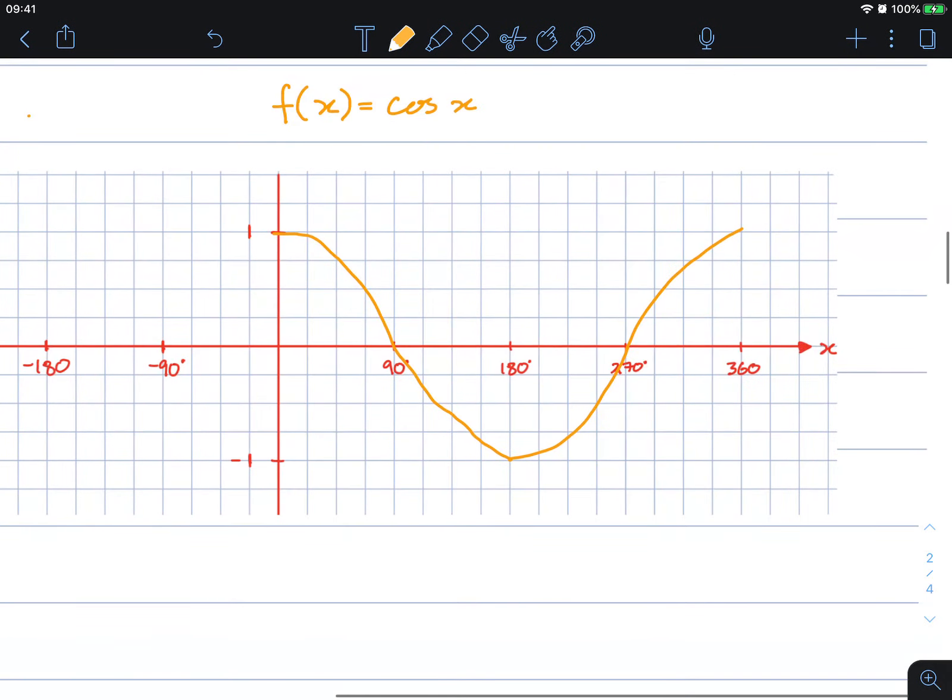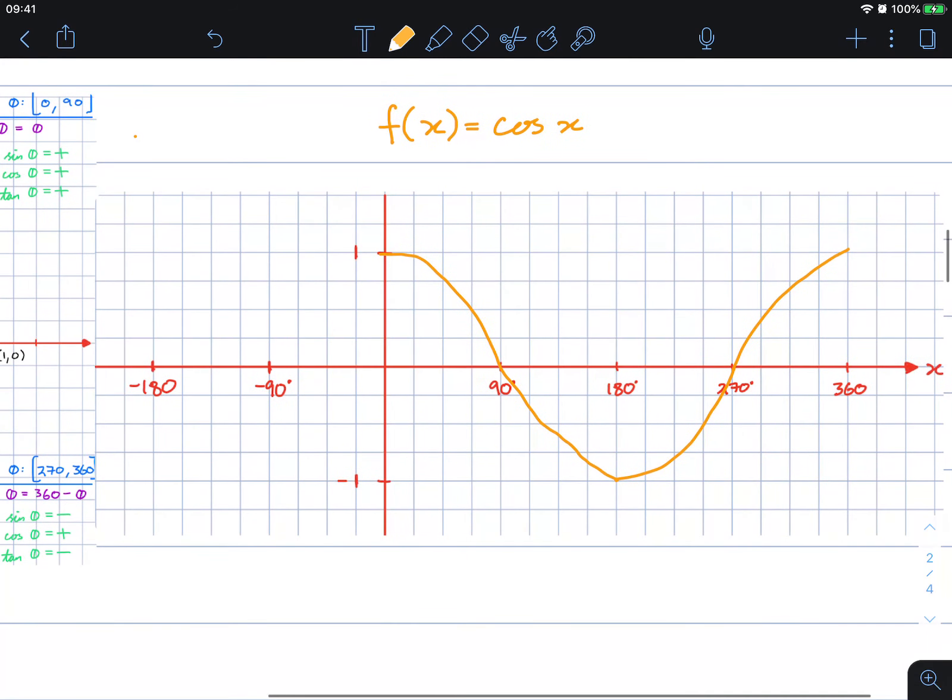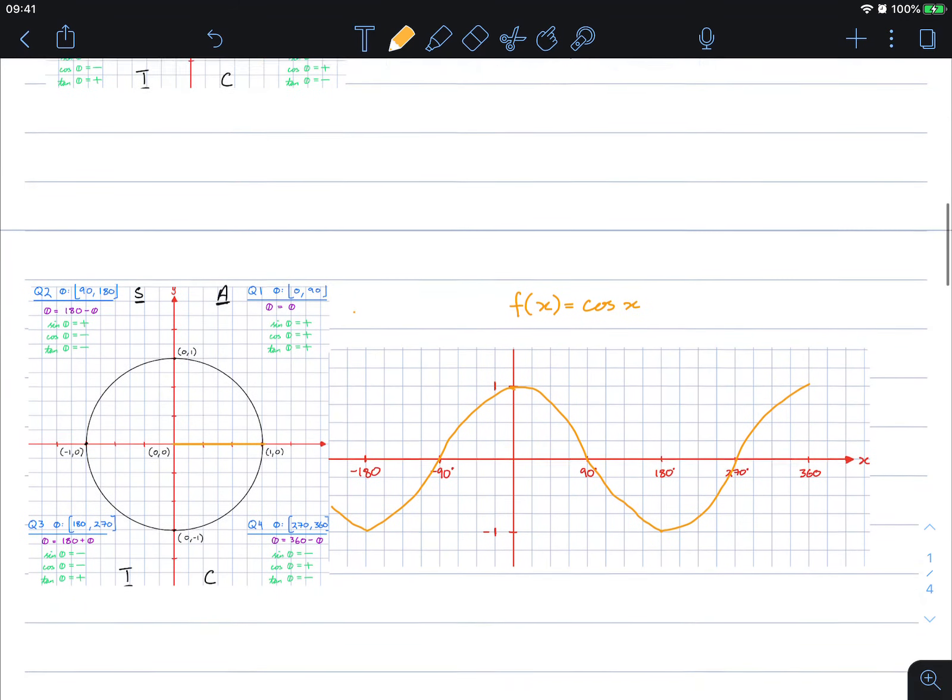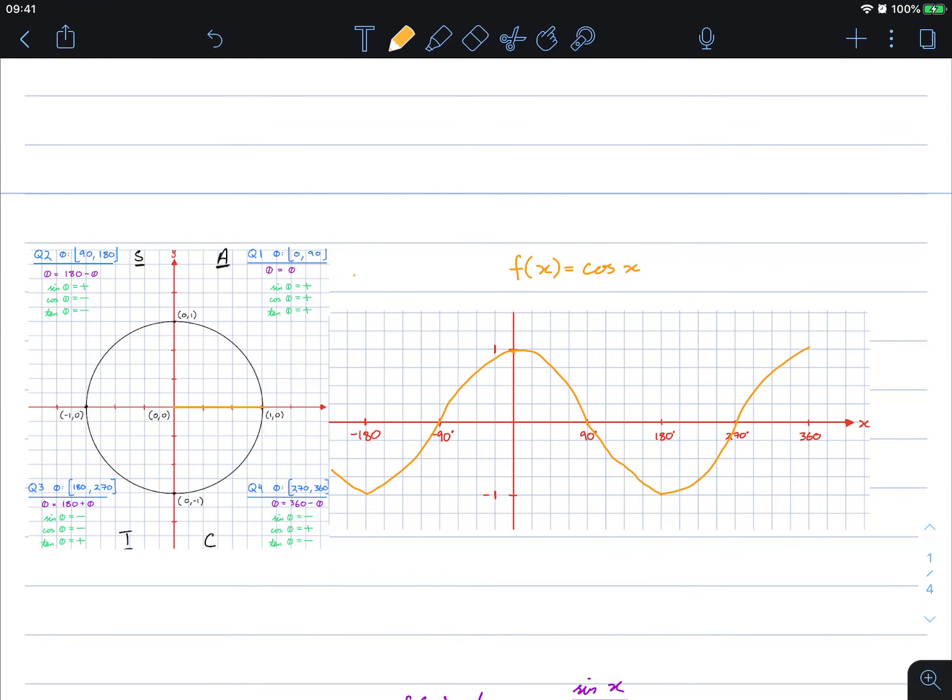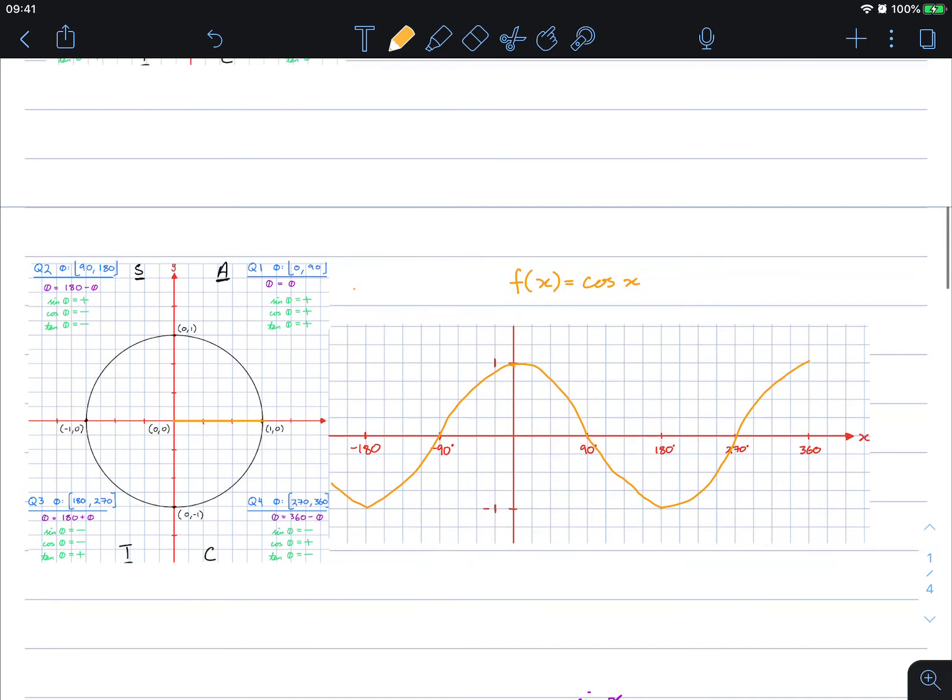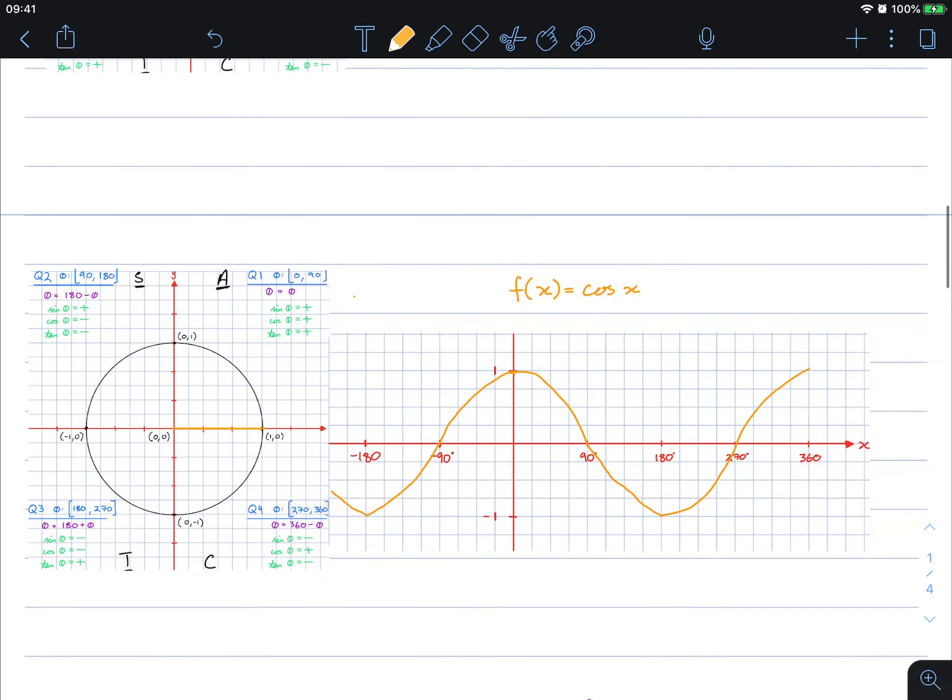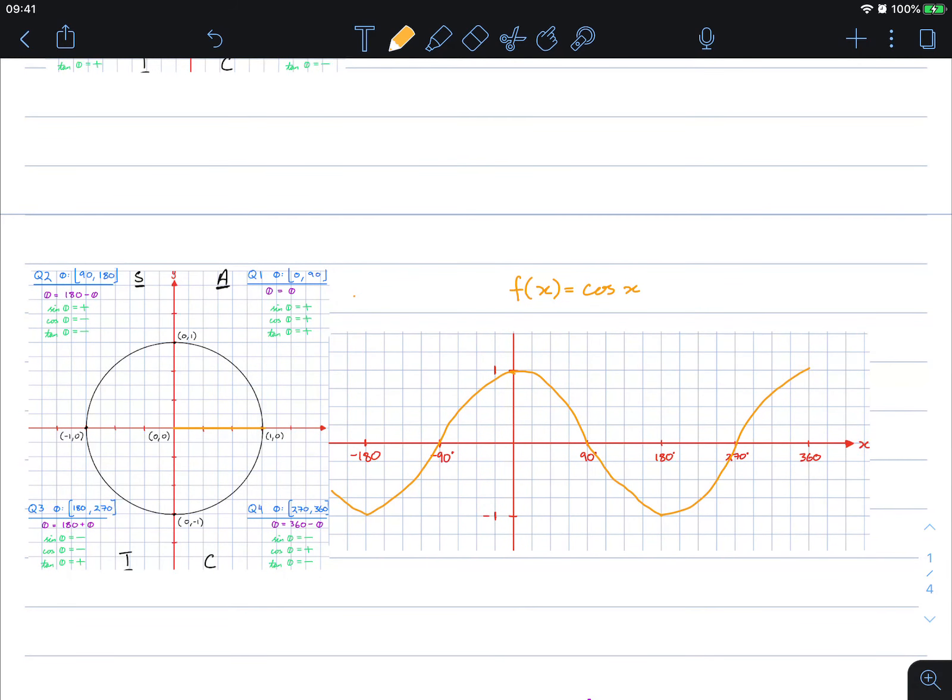You can probably see that this as well will cycle and repeat itself when it goes to the negatives, so it'll go down like this and it will repeat itself much like sine does as well. I hope that gave you another insight into the cosine curve. We'll do one more video on tan and then I'll demonstrate to you a proper graph of these using a graphing calculator.